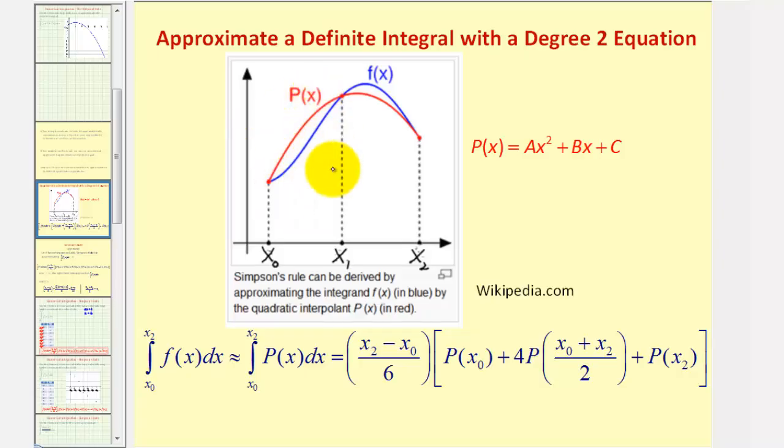For example, looking at this graph here, f of x is graphed in blue. To approximate the integral of f of x from x sub zero to x sub two, we would actually use the red quadratic function over the same interval. Notice how we're using two sub-intervals to form the quadratic function p of x. This is why n has to be even.